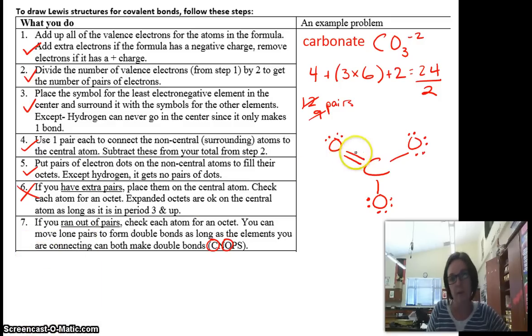Now I check for an octet. Carbon has 2, 4, 6, 8. Perfect. 2, 4, 6, 8. Perfect. So everything has an octet. So check.